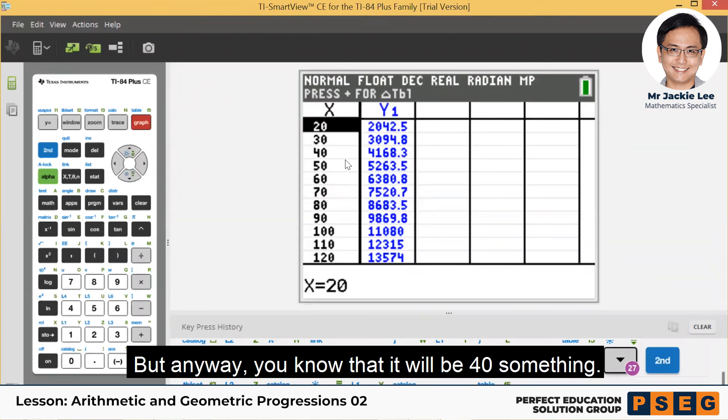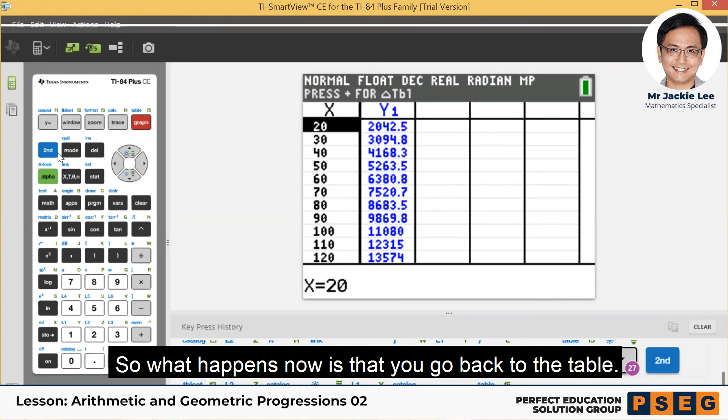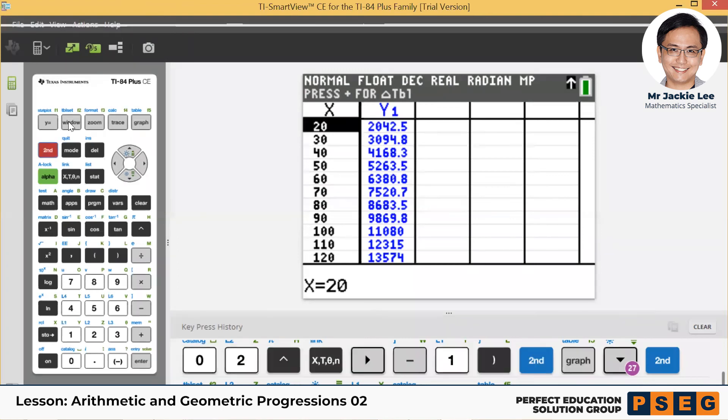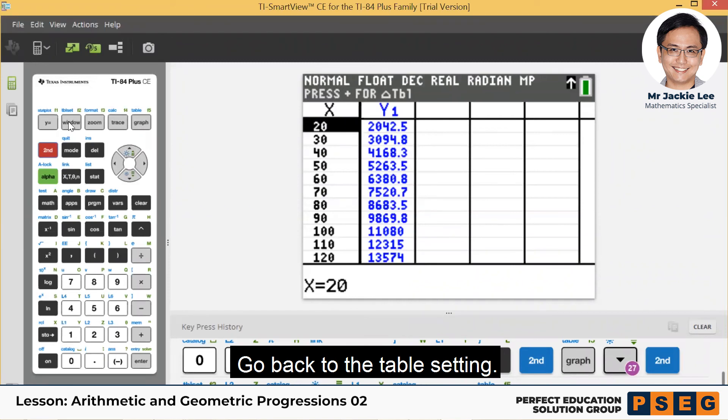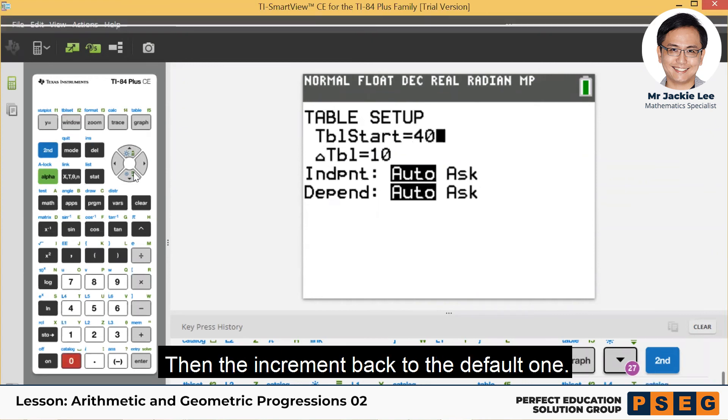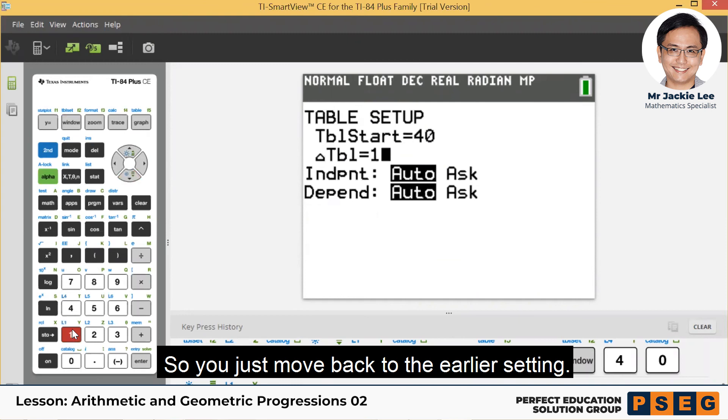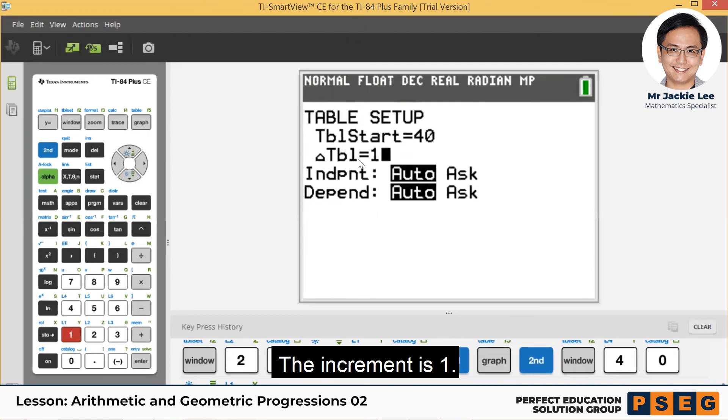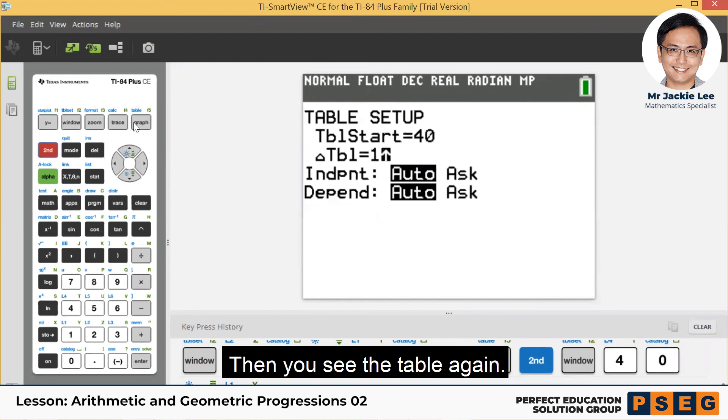But anyway, you know that it will be 40 something. So what happens is that now you go back to the table setting now. This one you change to 40 because it's 40 something. Then the increment you go back to the default one. So you just move back to the earlier setting, the increment is 1. Then you see the table again.